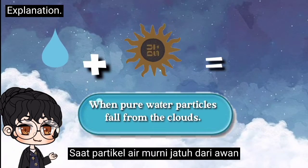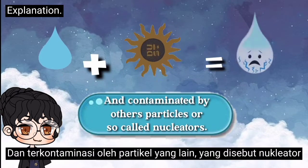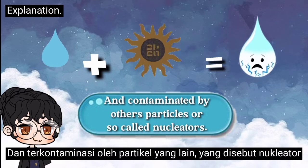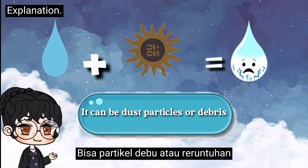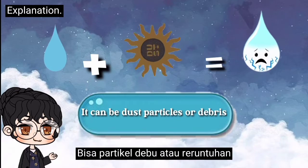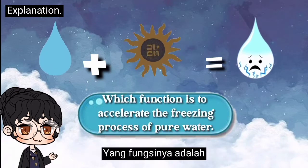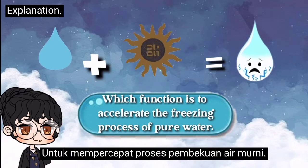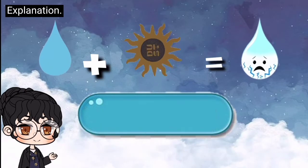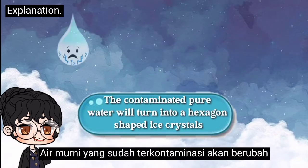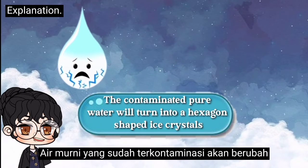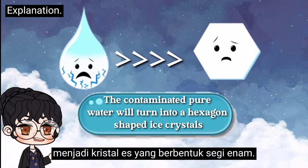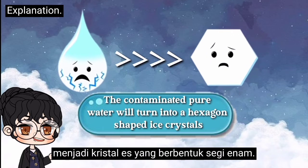When pure water particles fall from the clouds and are contaminated by other particles — or so-called nucleators, which can be dust particles or debris — this functions to accelerate the freezing process of pure water. The contaminated pure water will then turn into hexagon-shaped ice crystals.